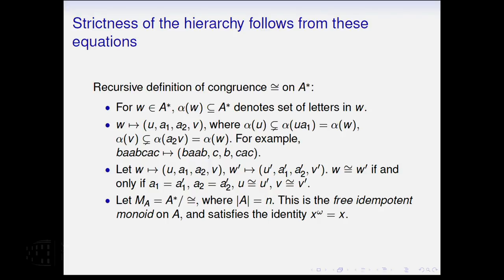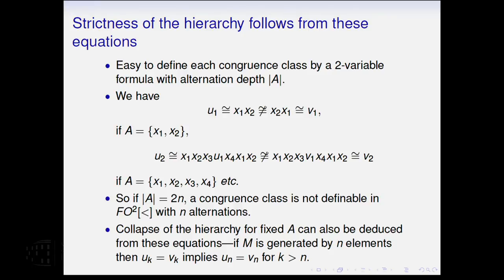So this defines the congruence, for example, for words over a three-letter alphabet. In terms of a two-letter alphabet, the induction starts at zero. So that's the congruence. And the quotient by this congruence, this is actually a well-known construction. This is the free idempotent monoid on A. Every element in it is idempotent, so it satisfies this identity here. And using that, it's actually pretty easy in terms of the description of the congruence to show that each congruence class is defined by a two-variable formula, and the alternation depth is equal to the size of the alphabet.